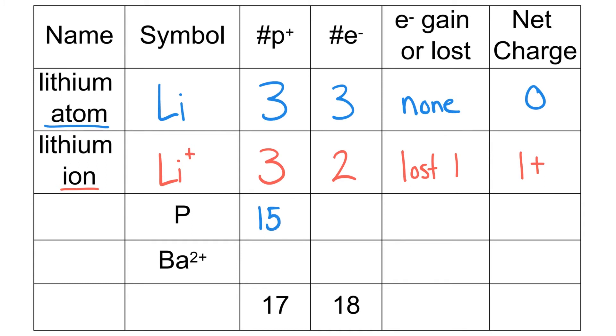The amount of electrons is going to equal 15 since there's no charge on the symbol, so I can write 15 electrons in. The electrons gained or lost? None. The net charge is going to be therefore zero.